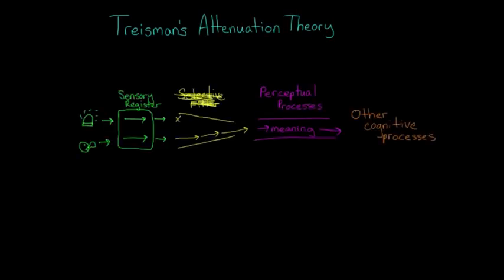So we come to Treisman's attenuation theory of selective attention. Treisman said that instead of a complete filter, we have something called an attenuator. Attenuate just means to weaken. So the attenuator weakens, but doesn't eliminate the input from the unattended ear.